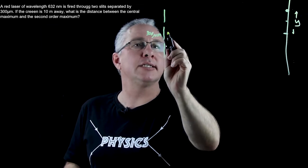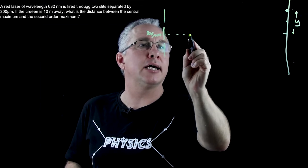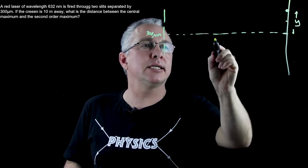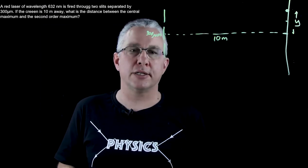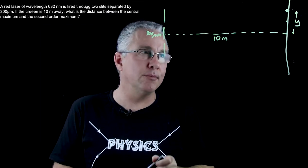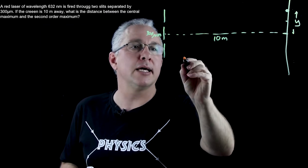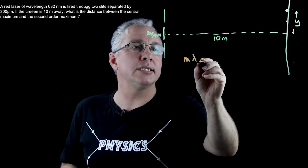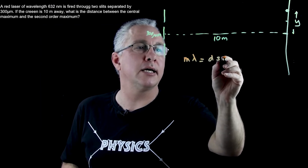Now we're also told that the distance between the screen and the double slits is equal to 10 meters. Now let's put down the formula. The formula says that m lambda is equal to d sine theta.